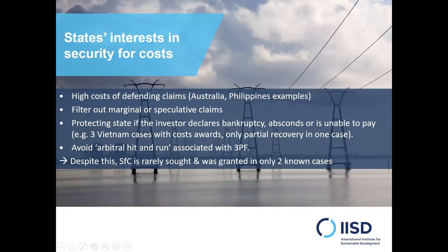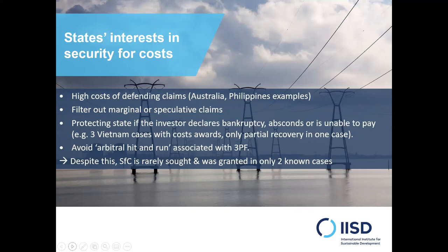Why are states interested in security for costs? There are a number of different reasons. The first is increasingly high costs of defending claims. Natalie mentioned the OECD figure of 8 million US dollars as the average estimated cost, but we're also seeing examples of countries paying much higher bills. For instance, the Philippines spent 58 million US dollars to defend two cases brought by a German investor, and Australia spent 39 million US dollars defending a case brought by Philip Morris, the tobacco company.